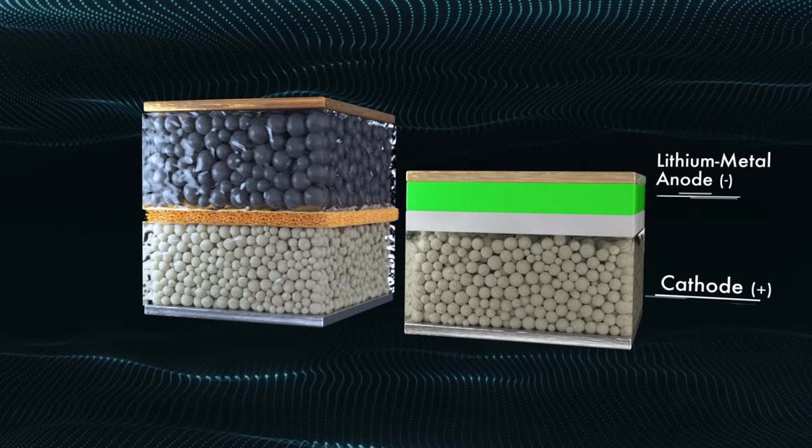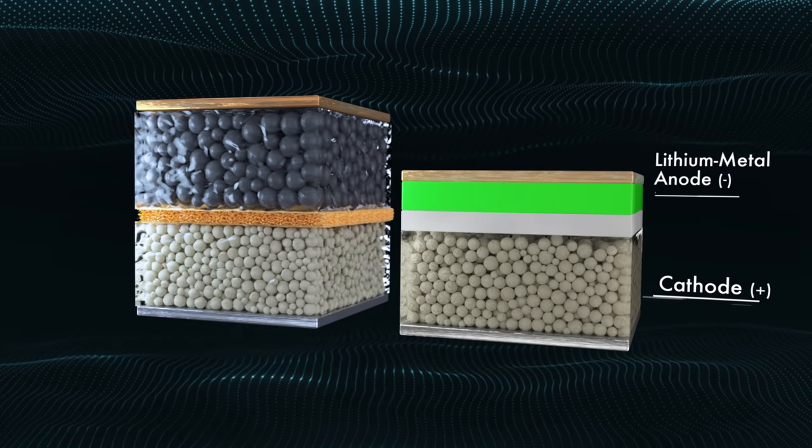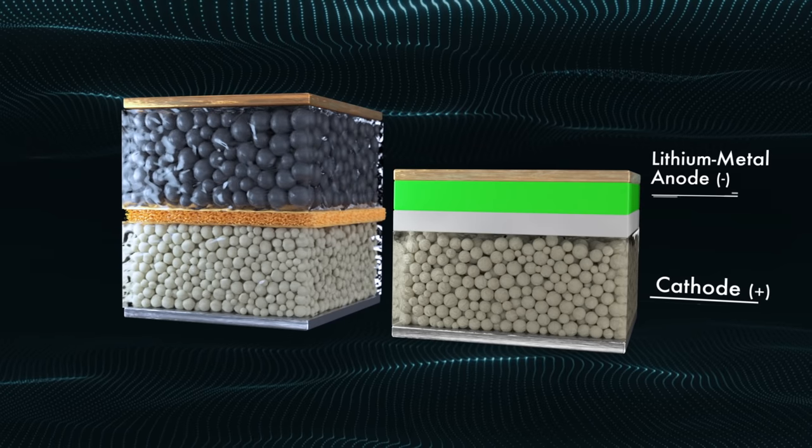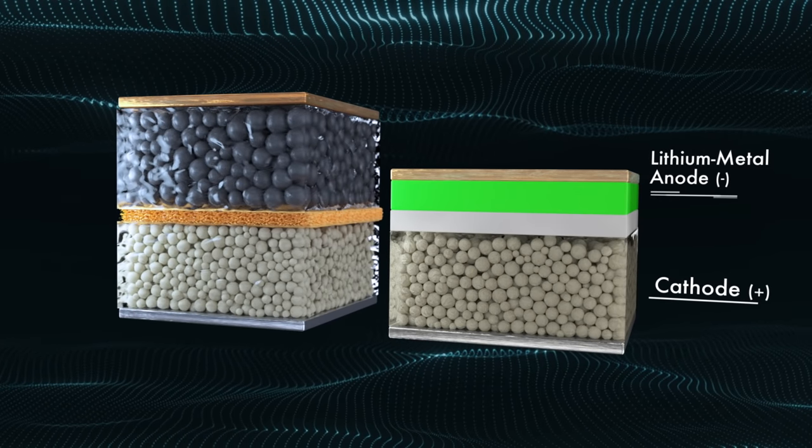A lithium metal anode allows the energy of the solid-state battery to be stored in a smaller volume, enabling a higher energy density as compared to conventional lithium ion batteries.